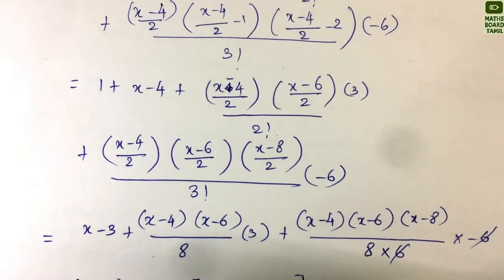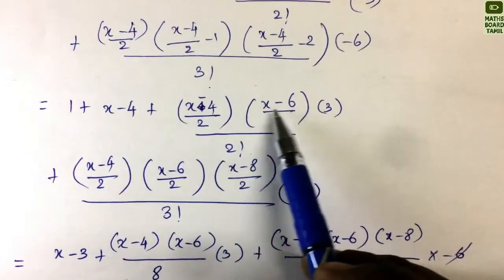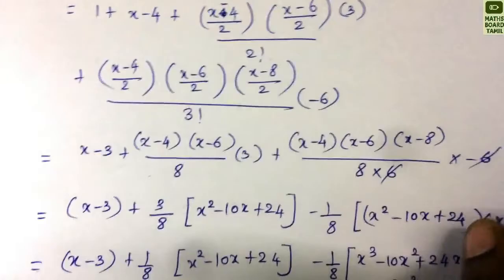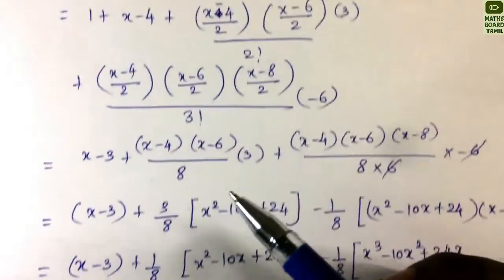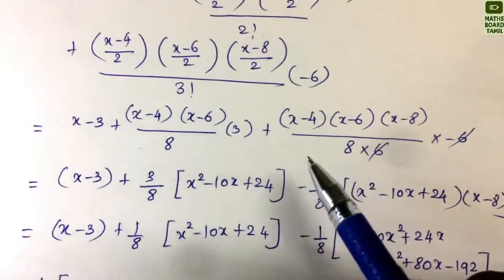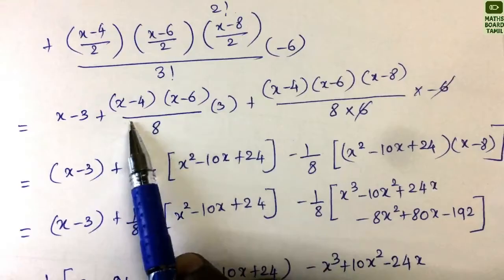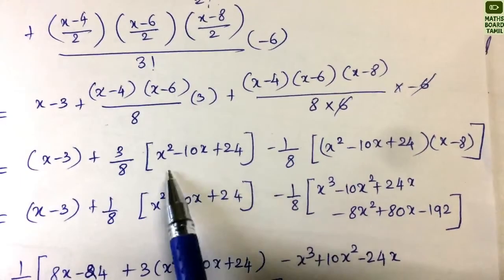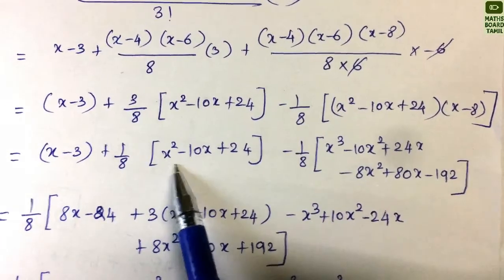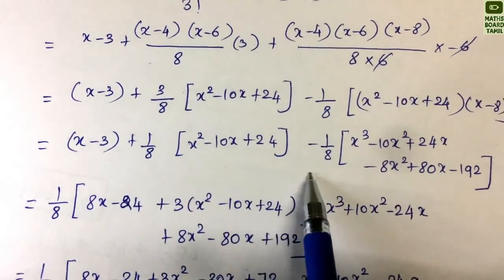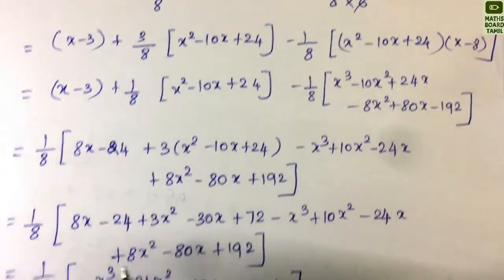Now we simplify this polynomial. We get 1 + (x−4), then for the next term: 2 factorial is 2, 3 factorial is 6, and combining the denominators we get 8. The factor 1/8 is common, and we multiply through and rearrange in terms of x³, x², x, and constant.